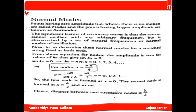The amplitude is zero for values of kx that give sin(kx) = 0, so kx = nπ where n = 0, 1, 2, 3, ... Since k = 2π/λ, we get x = nλ/2. The first node forms at x = 0, the second at x = λ/2, and so on. The distance between two successive nodes is λ/2.